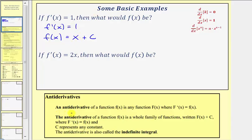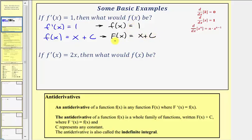An antiderivative of a function f of x is any function big F of x where big F prime of x equals f of x. When talking about antiderivatives, we let the derivative function be equal to little f. So little f of x equals one, and we let the antiderivative be big F of x — in this case, big F of x equals x plus c. Big F is the antiderivative of little f because F prime of x equals one, which equals little f of x.